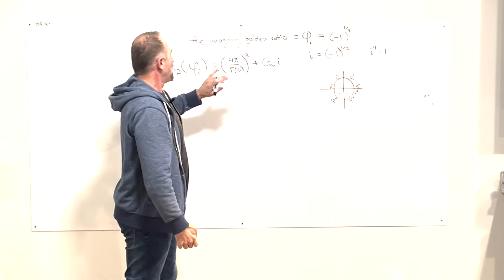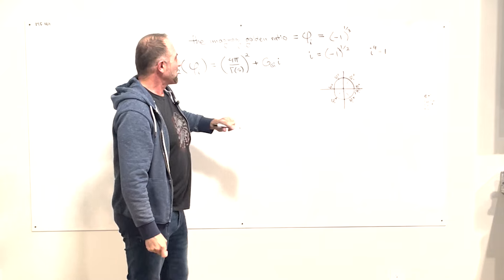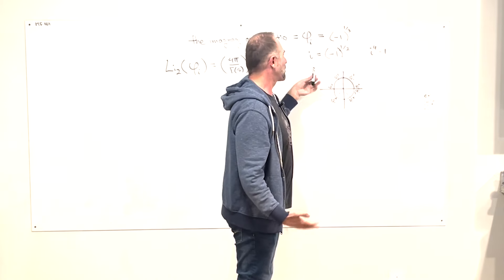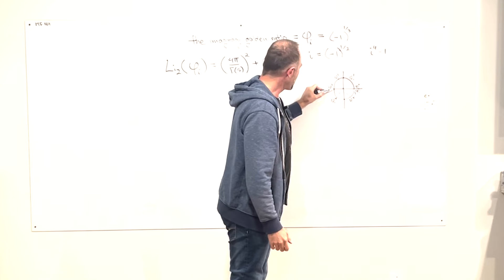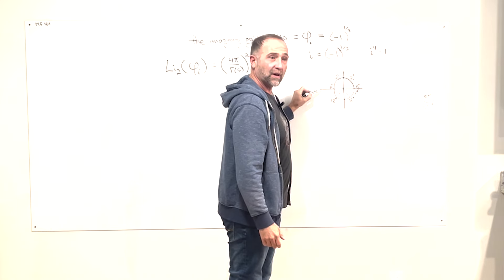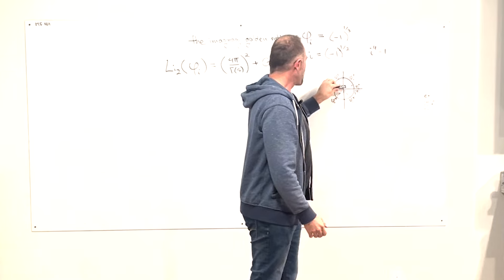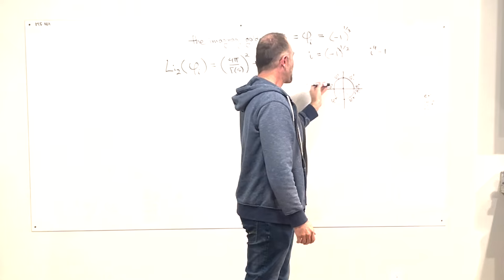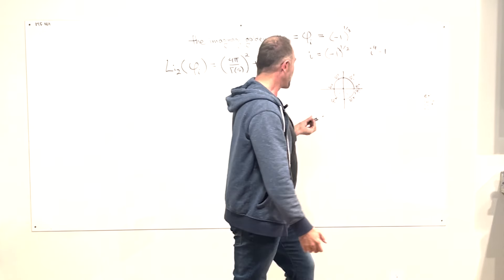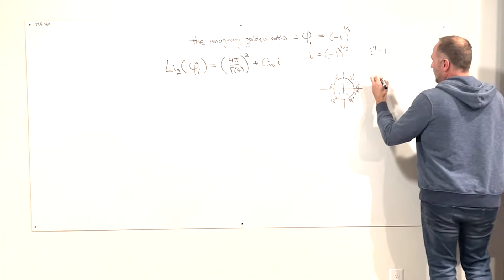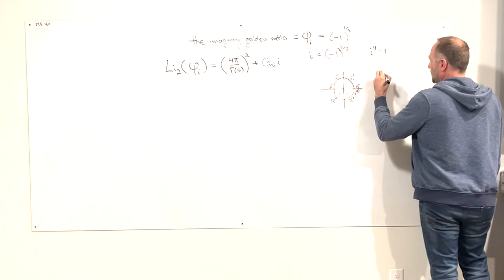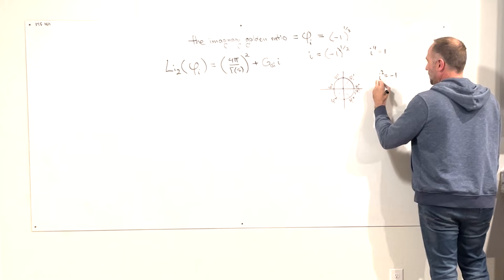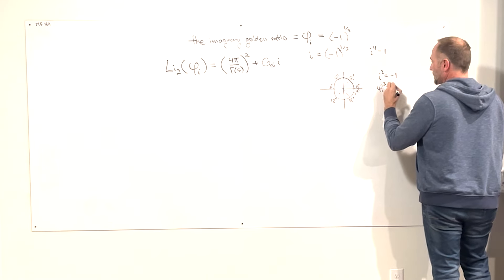Here's our first structure. Notice these have several important features. At this point it's negative one. If we were using i instead, we go i for one, and i squared back to negative one — so they match at negative one. Explicitly: i squared equals negative one, and the imaginary golden ratio cubed equals negative one.